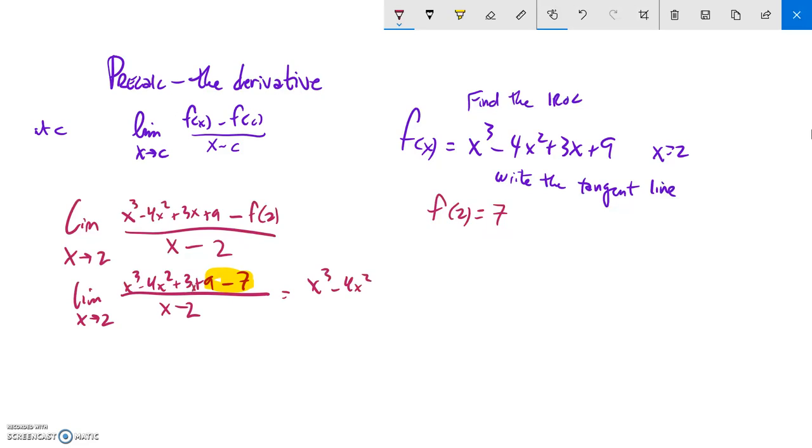So I have x cubed minus 4x squared plus 3x plus 2 over x minus 2, and we're still finding the limit of this thing. The limit as x approaches 2.